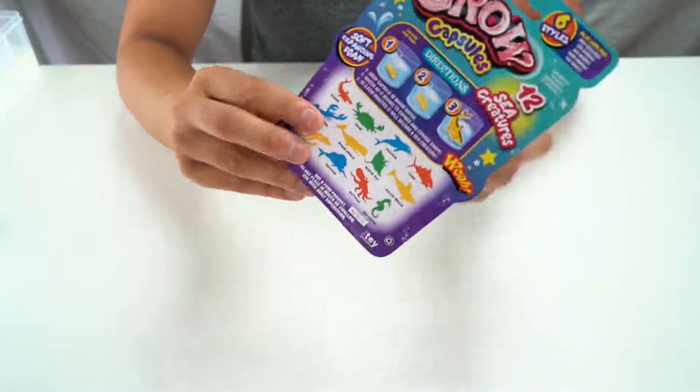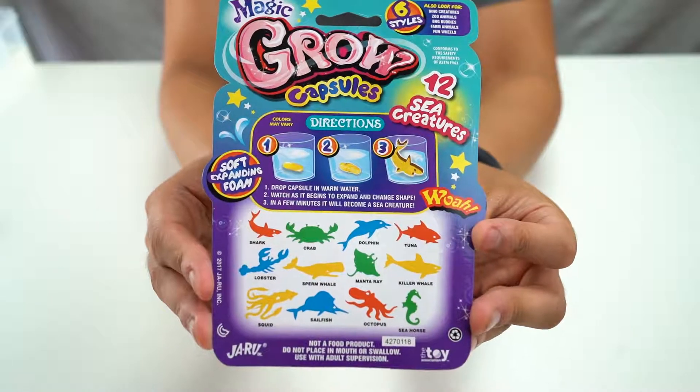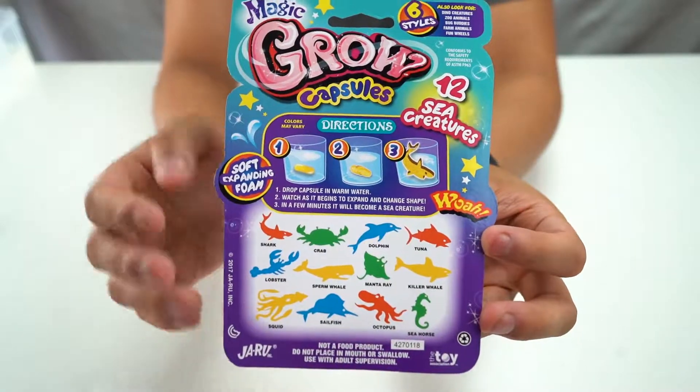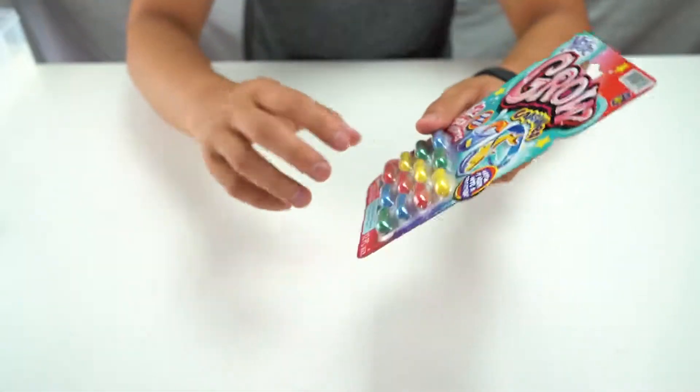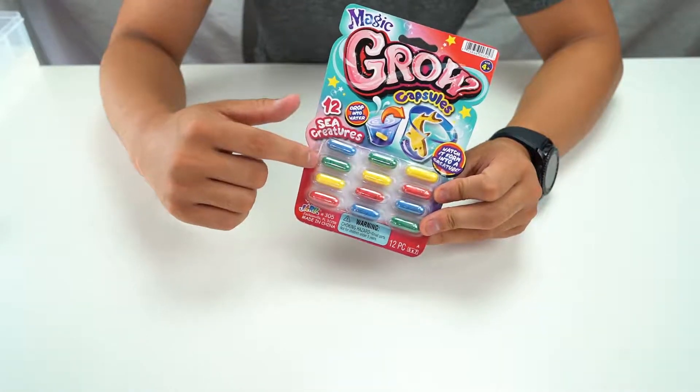But in this one they have a whole bunch of different sea creatures like a shark, dolphin, crab. If you haven't seen Magic Grow capsules at all, basically inside these little capsules is a little sponge that's shaped like one of these.